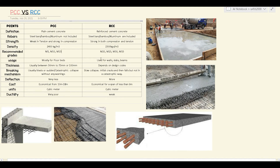When it comes to usage, PCC is mostly used for floor beds — the first building pad or initial floor bed is usually PCC. RCC is used for every other component: retaining walls, shear walls, walls, slabs, beams, and columns.